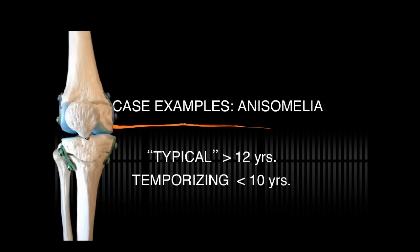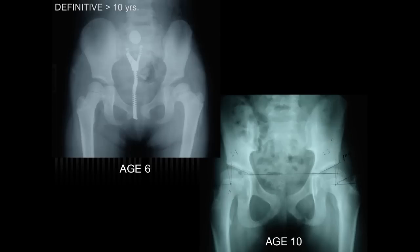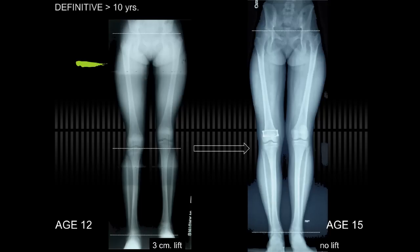Case examples for anisomelia. A typical case is an adolescent where this may be the definitive procedure, versus temporizing in children under 10 where it has to be reversible. This child had developmental dislocation of the left hip treated by medial open reduction and spica cast. You can see the slight effects of osseous necrosis — the femoral head has recovered but the femoral neck is shorter, the femoral head is slightly larger on the left, and the trochanteric height is elevated. Up until age 10 she was asymptomatic, but during adolescence she developed a three centimeter discrepancy. By calculation, epiphysiodesis on the right would be sufficient given her skeletal maturity, and by age 15 she had achieved equal limb lengths. The implants can optionally be removed if symptomatic.